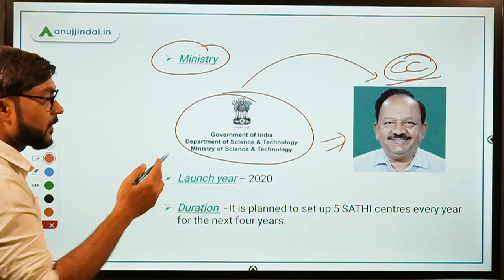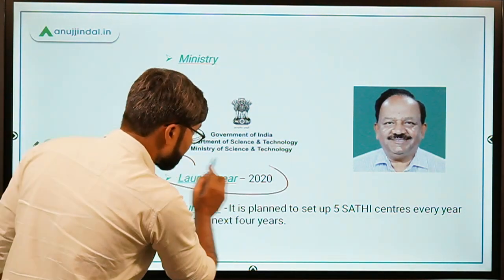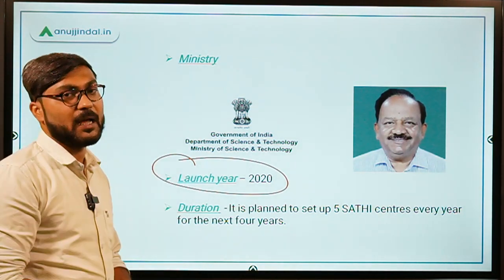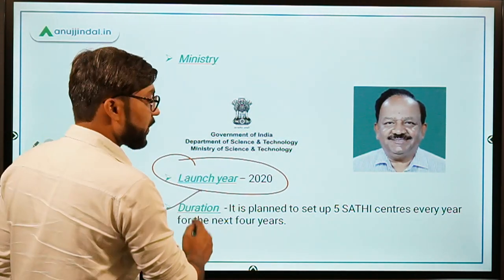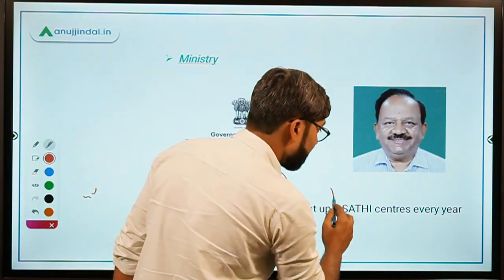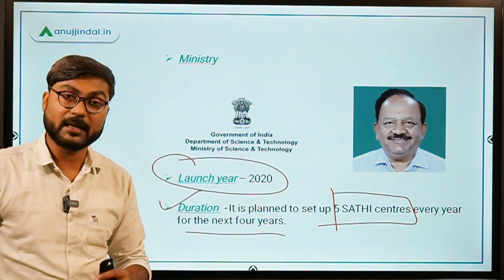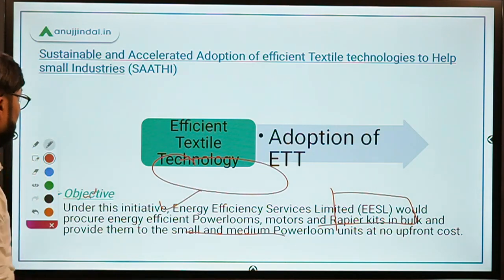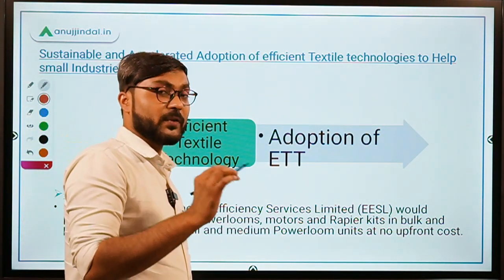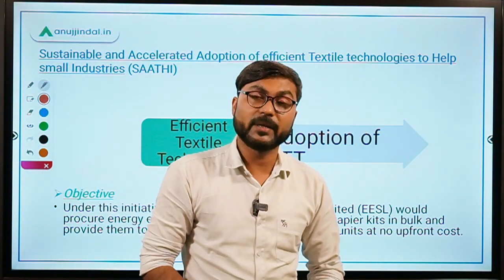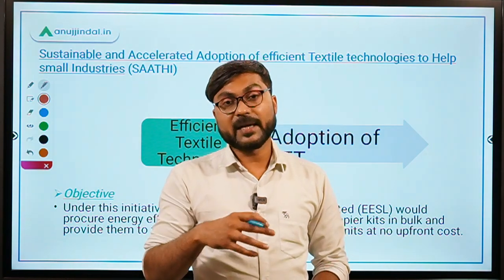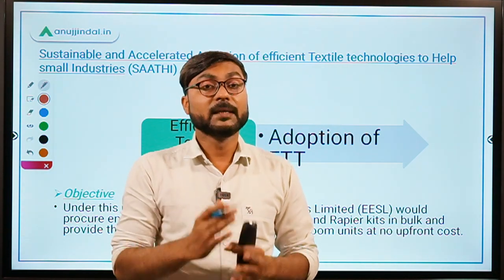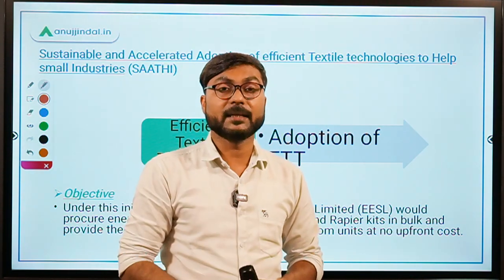This scheme was implemented by the Ministry of Science and Technology and was launched in February 2020. The duration is that every year, five SATHI centers will be made for the next four years across the country. So I hope this first SATHI is clear — analytical instruments will be made to avoid duplication and dependency on foreign sources, and also to help create and protect intellectual property rights.